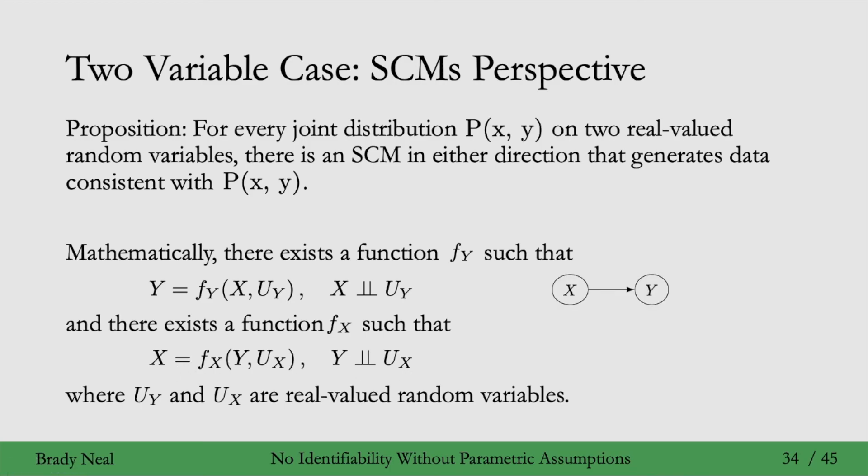So that first one corresponds to this causal graph, X to Y, and then the second one corresponds to this causal graph where there's an arrow from Y to X. Either causal graph could explain our data.